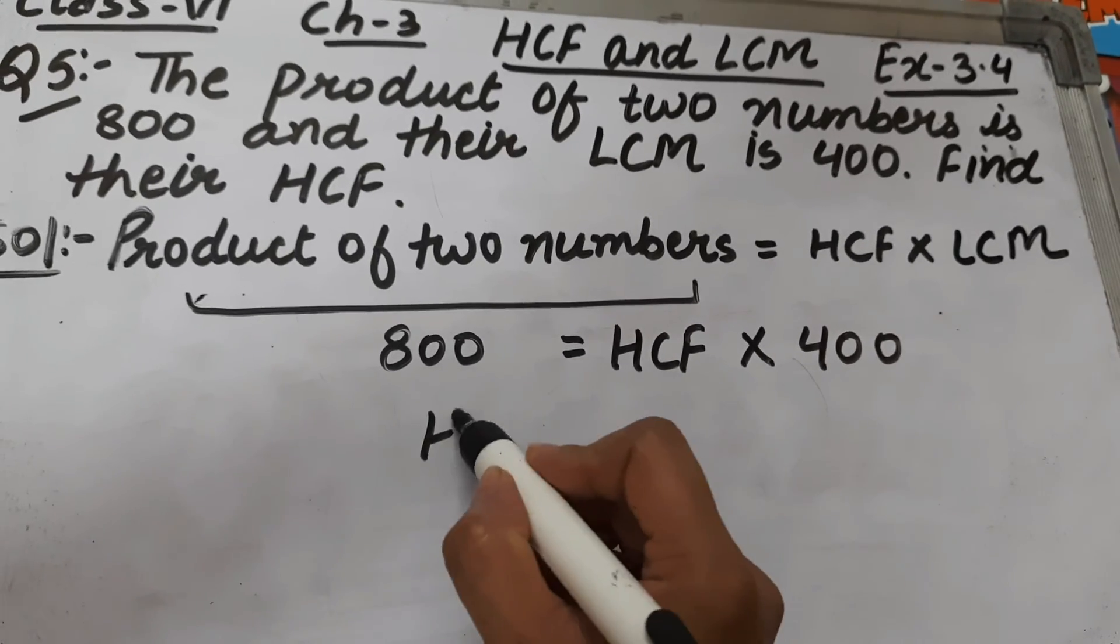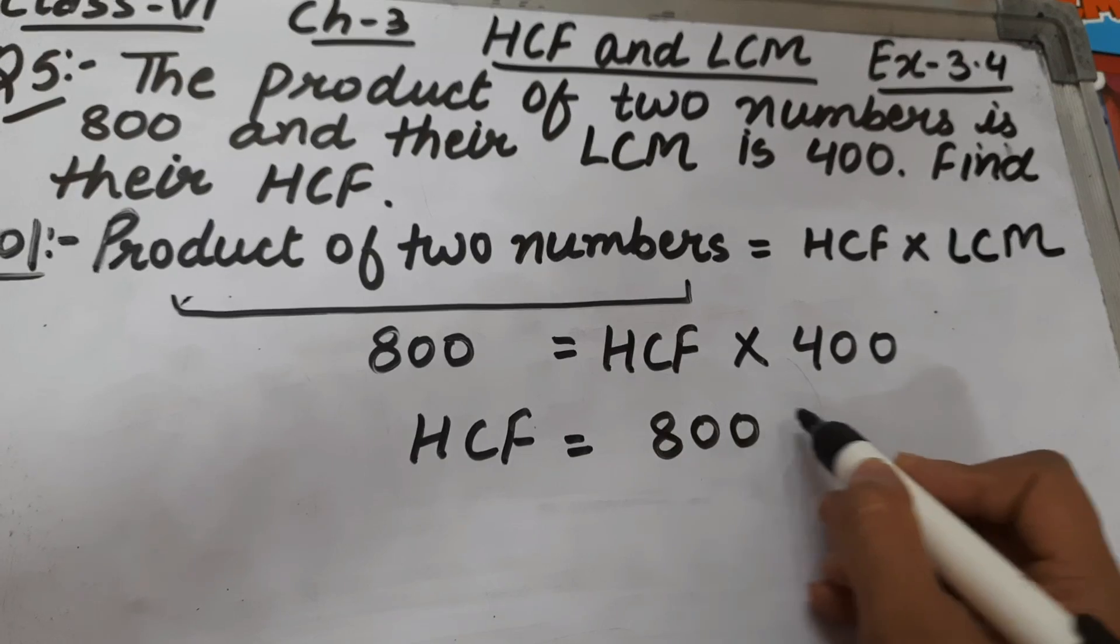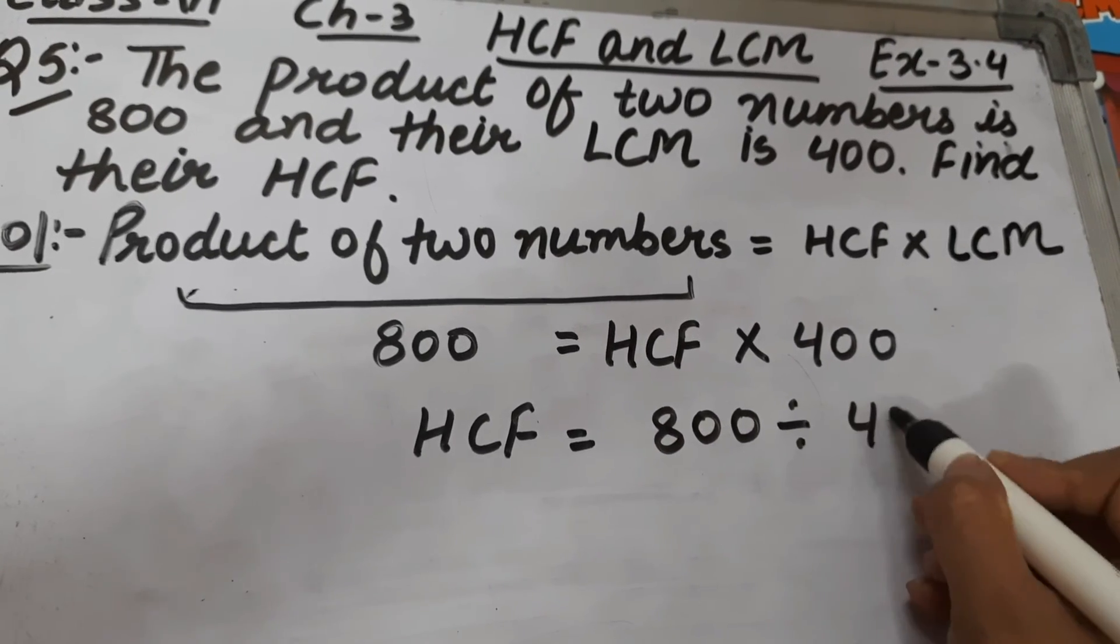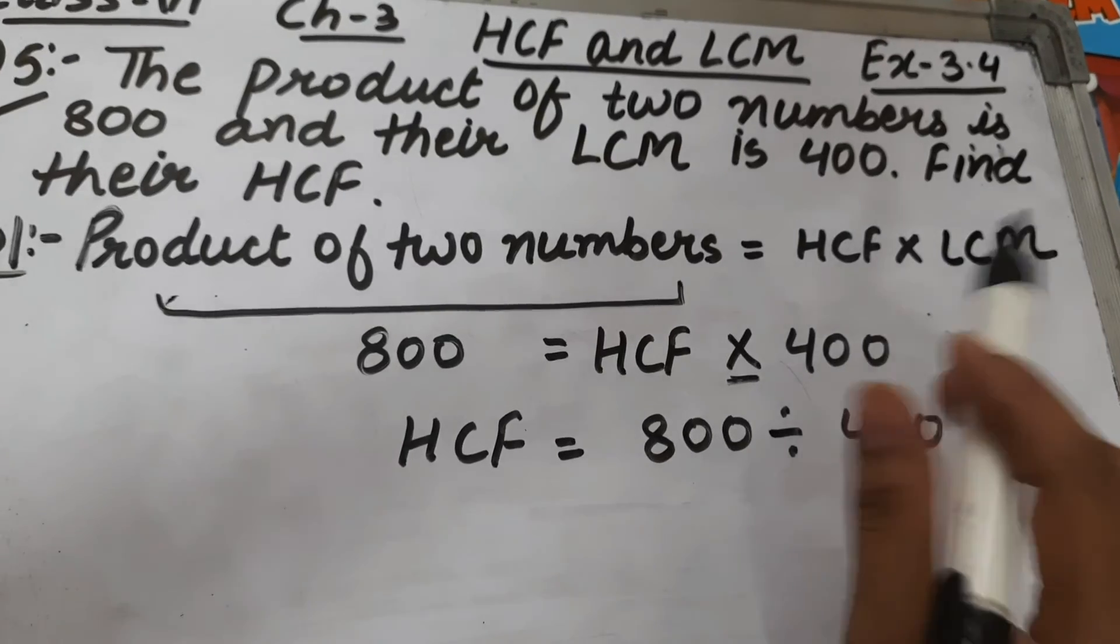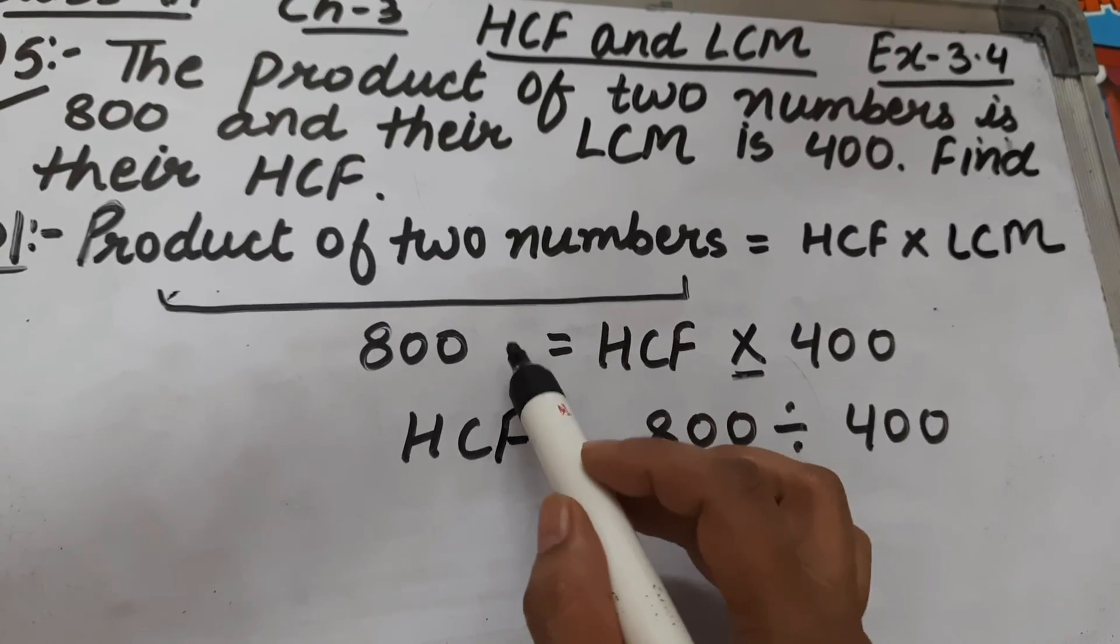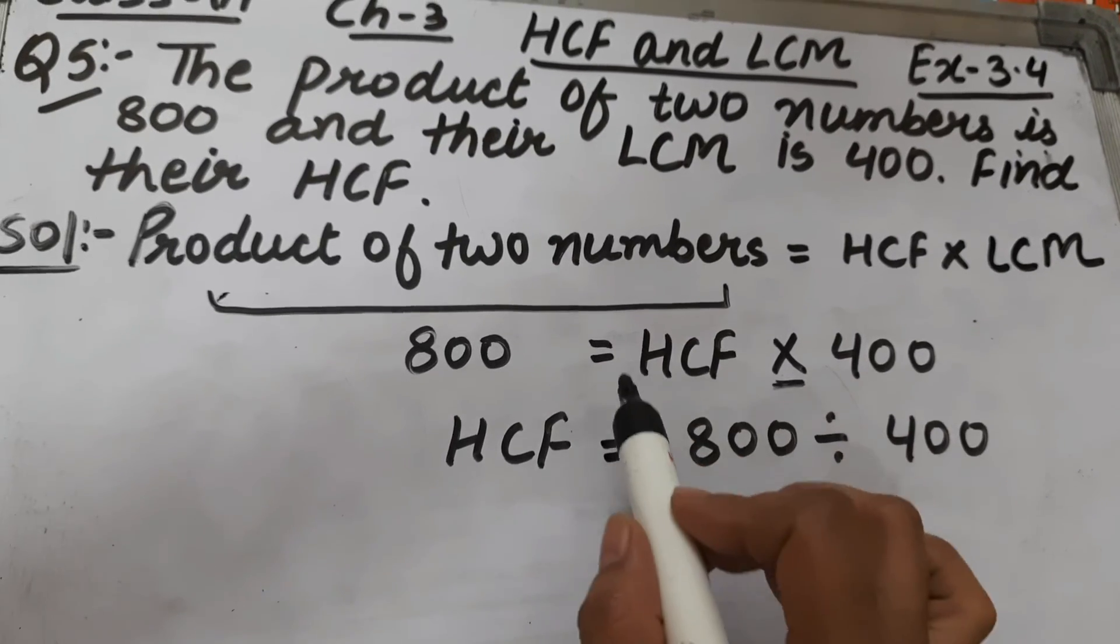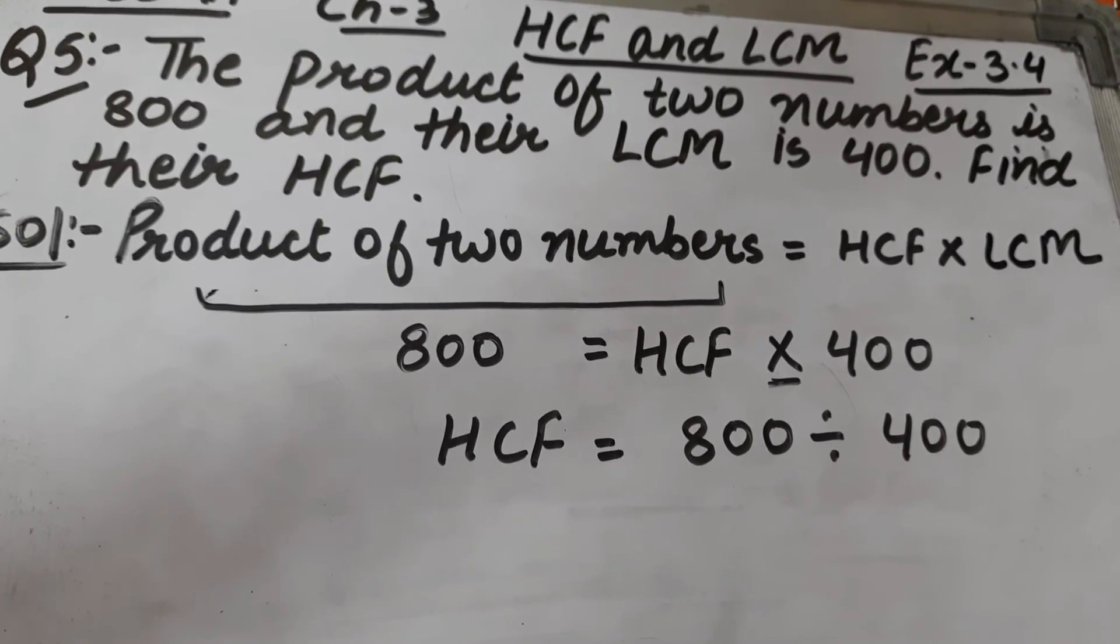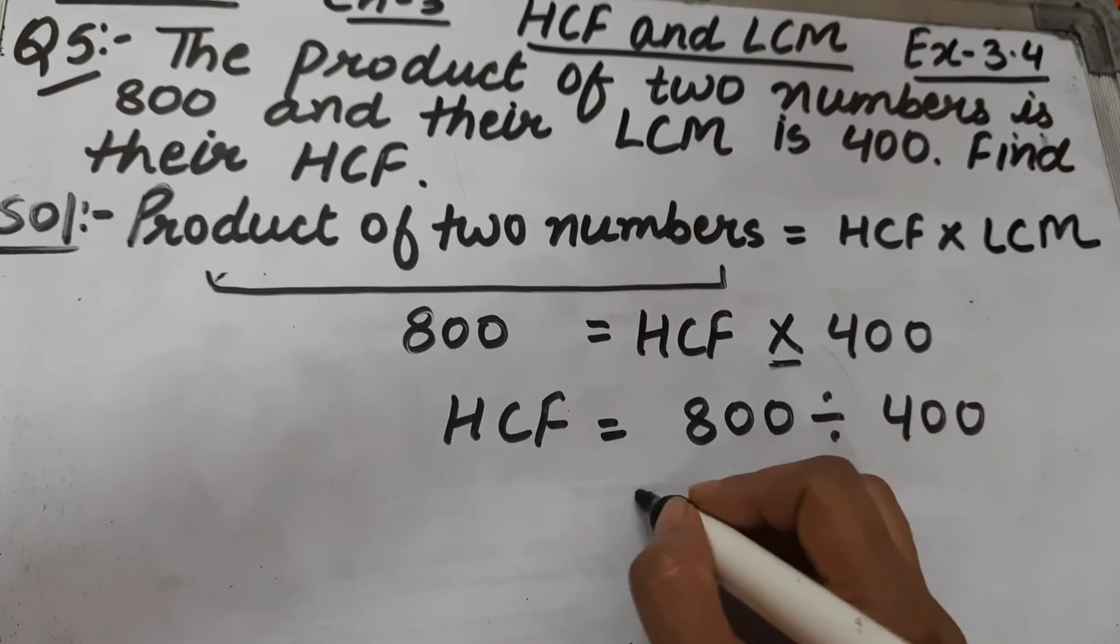Now we have to find HCF. So what will be the HCF? HCF will be 800 divided by 400. Here is multiplication sign - when it changes its position the sign gets changed, multiplication sign changes to division sign. Now HCF is 800 divided by 400 which is 2.